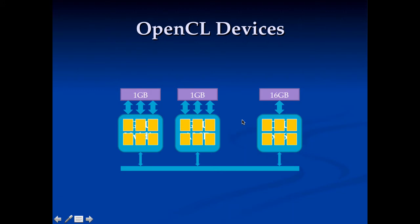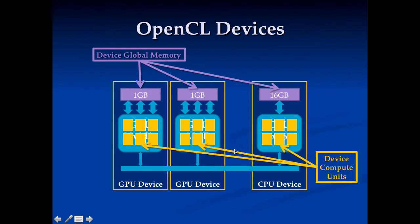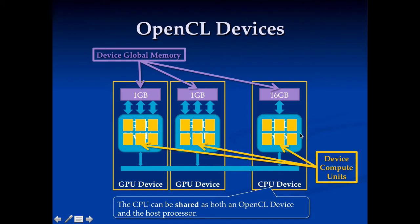Let's look at what OpenCL devices are in more detail. Here's a GPU device, another GPU device, and a CPU device. Each device has its own global memory — that's the memory the device can access — and each device has a certain number of compute units, which are the hardware cores that do the actual computation. It's important to note that the CPU device is shared with the host processor, so it isn't just for OpenCL — it's also used by the operating system and your regular program. It also shares memory, so the global memory may be used up by other things like the operating system and other programs.